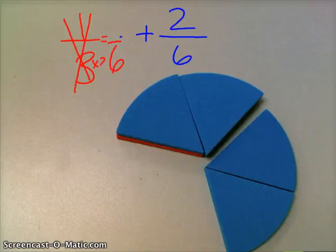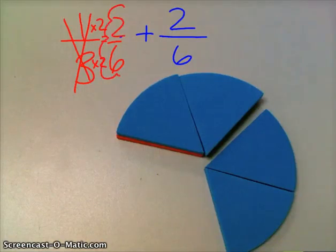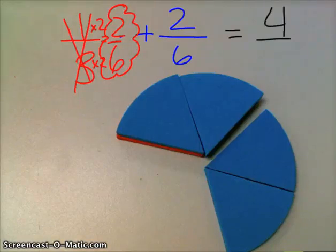Three times two is six. What should I do to the top? Two times two. Multiply by two. So one times two is two. Okay, so two-sixths plus two-sixths equals what? Four and six. Four and six. Do you have four and six on your page?